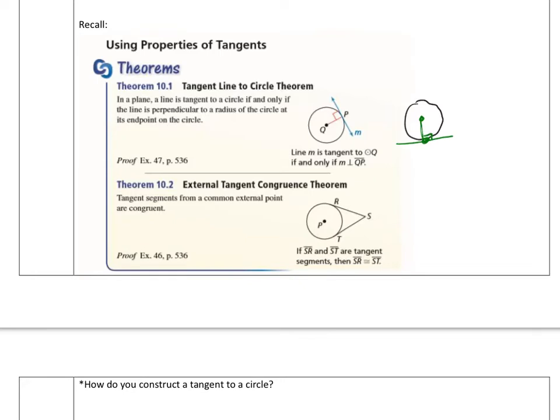Now we have our next theorem. And on this one, it says the external tangent congruence theorem. That's what your author of this book calls it. And it's tangent segments from a common external point are congruent. So here's what it's saying. If I have this point right out here, and I draw a tangent, and I draw a tangent, these two will be congruent. So when I draw those tangents, you end up with these segments as being congruent. So this segment from S to R will be congruent from S to T. All right, let's move on.